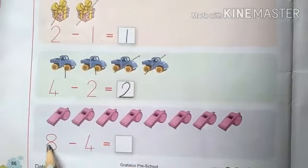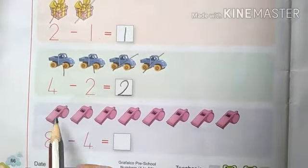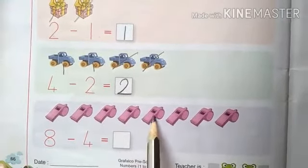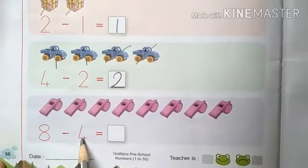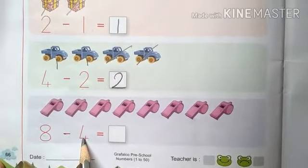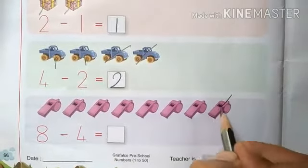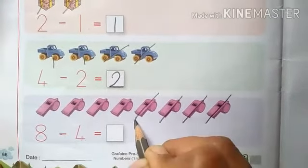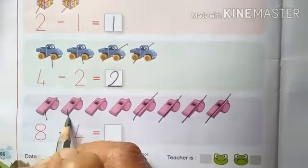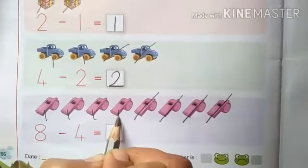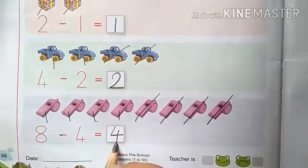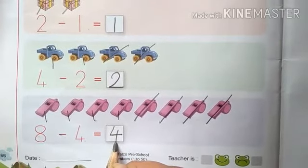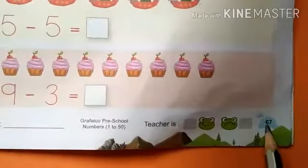Now next: 8 minus 4 — 1, 2, 3, 4, 5, 6, 7, 8. 8 mein se humen 4 objects cut karne, kam karne hain na? 1, 2, 3, 4. Now count remaining: 1, 2, 3, 4. 4 objects baaki reh gaye, to yahan kya likhenge? Number 4. Okay.